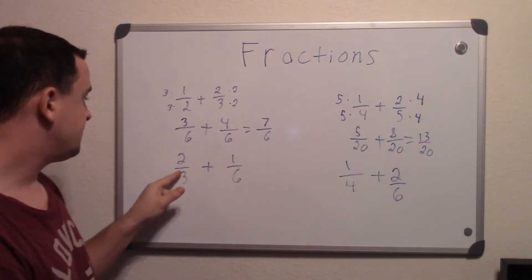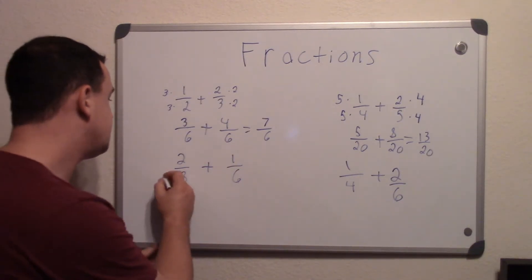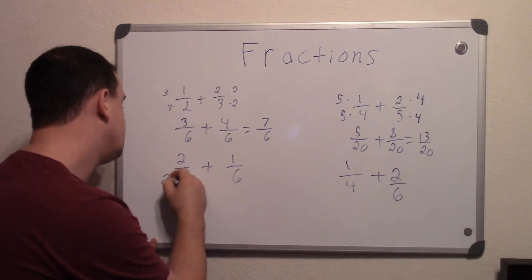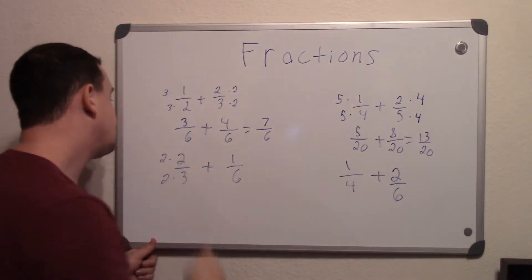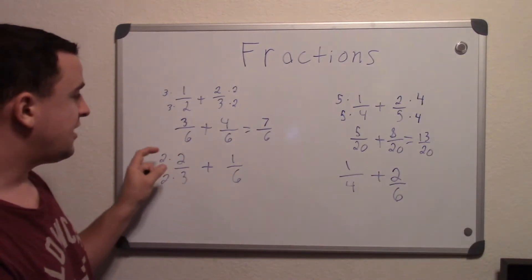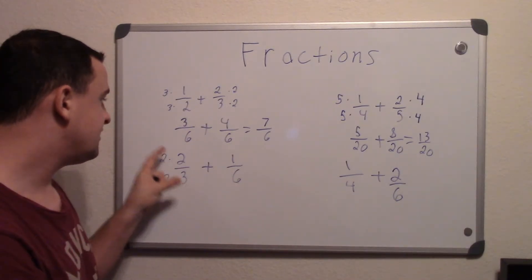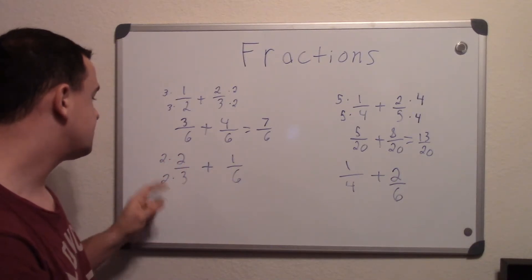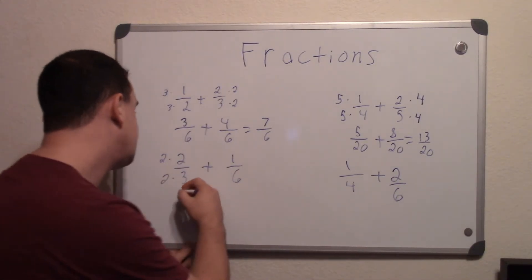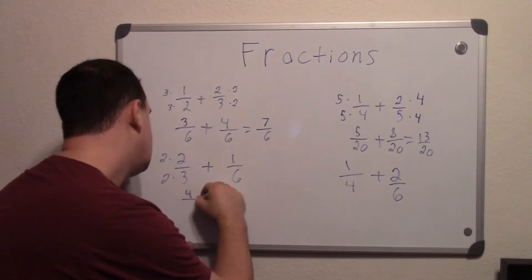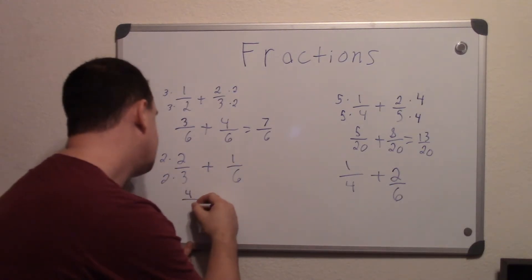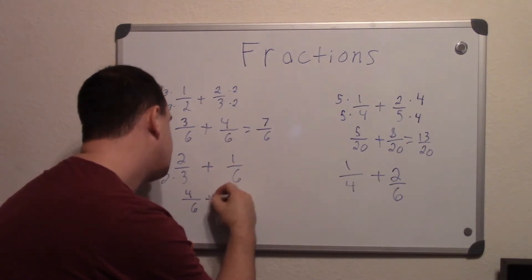And multiply this one, so 3 goes into 6 twice, so we multiply by 2 to the top and bottom. The reason why this is working by only doing it to one side is because you're multiplying just this side by 1. So this side is still the same value as 2/3. So we go across, 2 times 2 is 4, and 2 times 3 is 6, and we leave that one the same.